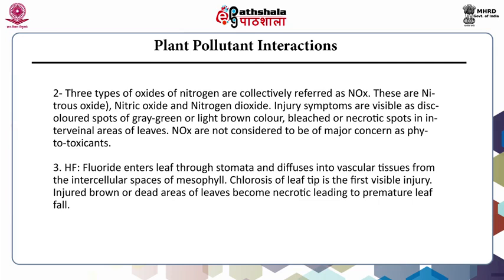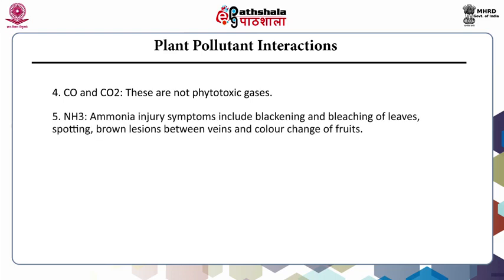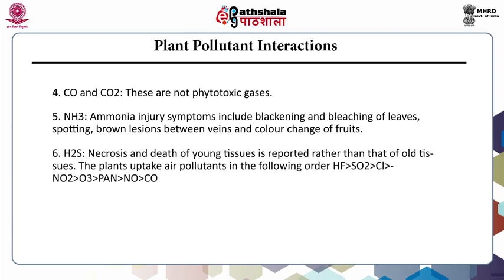NOx are not considered to be of major concern as phytotoxicants. Next is hydrofluoride. Fluoride enters the leaf through stomata and diffuses into vascular tissues from the intercellular spaces of mesophyll. Chlorosis of the leaf tip is the first visible injury. Injured brown or dead areas of leaves become necrotic, leading to premature leaf fall. Carbon monoxide and carbon dioxide are not phytotoxic gases. Ammonia injury symptoms include blackening and bleaching of leaves, spotting, brown lesions between veins and color change of fruits. In the case of hydrogen sulfide, necrosis and death of young tissues is reported rather than old tissues.